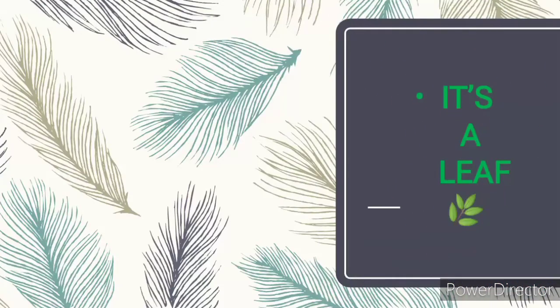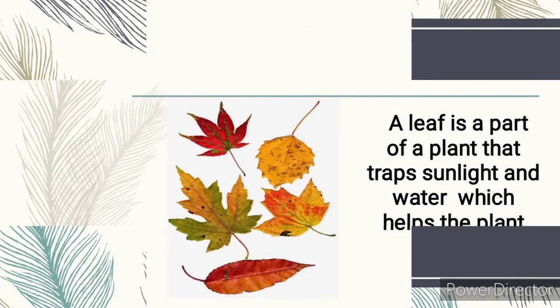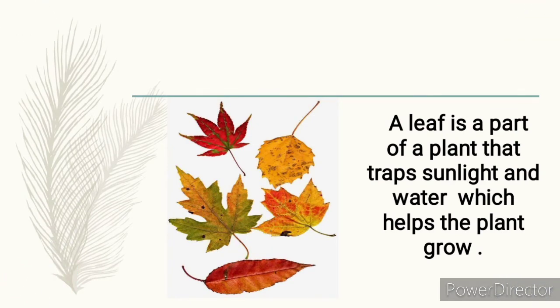Hello, welcome to another interesting and fantastic class. Today's topic is: it's a leaf! Wow, what's this? Is this a fish, a monkey, a kangaroo, or a carrot? No, these are leaves! Can you see the leaves have different colors — they have red, yellow, green, orange, and so on.